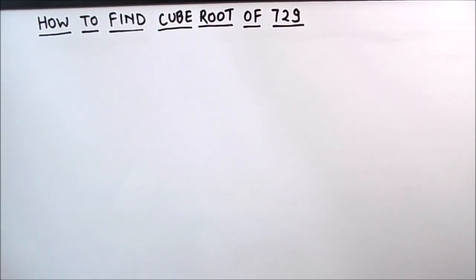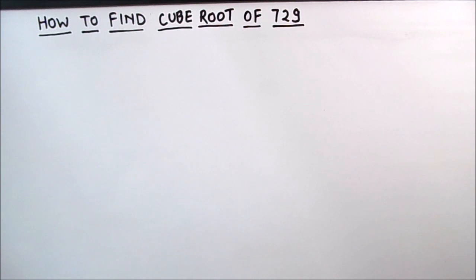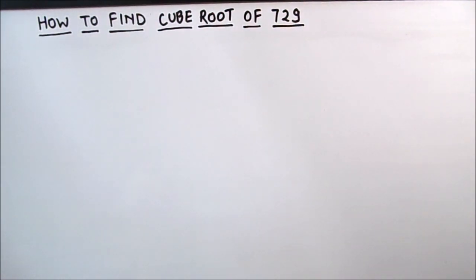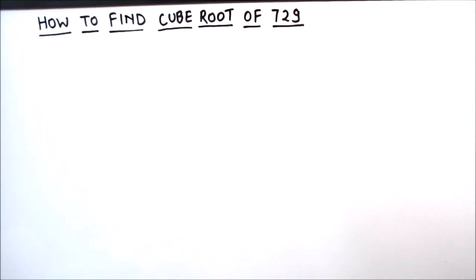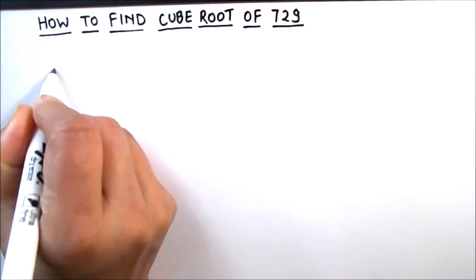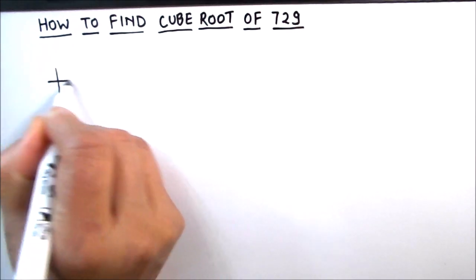Hello everyone. Today in this video we are going to learn how to find the cube root of 729. We will be using the prime factorization method. In this method, we will find the prime factors of 729 and write 729 as the product of its prime factors. For that, we need to divide 729 by prime numbers, so let's start.